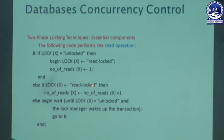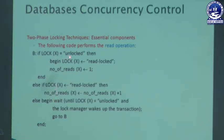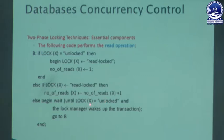If both conditions are false — item X is not unlocked and not in read lock — then X must be locked in write mode. In that case, the requesting transaction will wait until lock X equals unlock. The lock manager, upon unlocking, wakes up one of the transactions in the waiting queue and assigns data item X to that transaction.